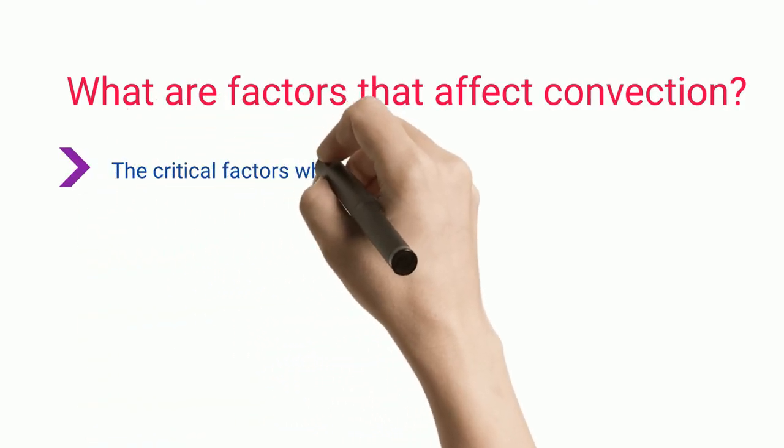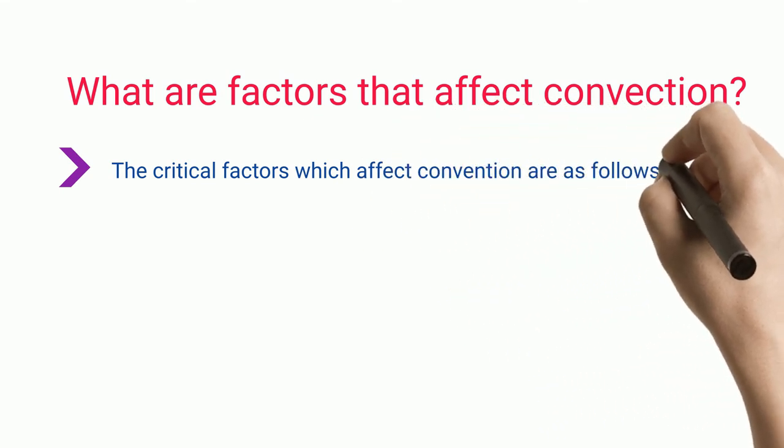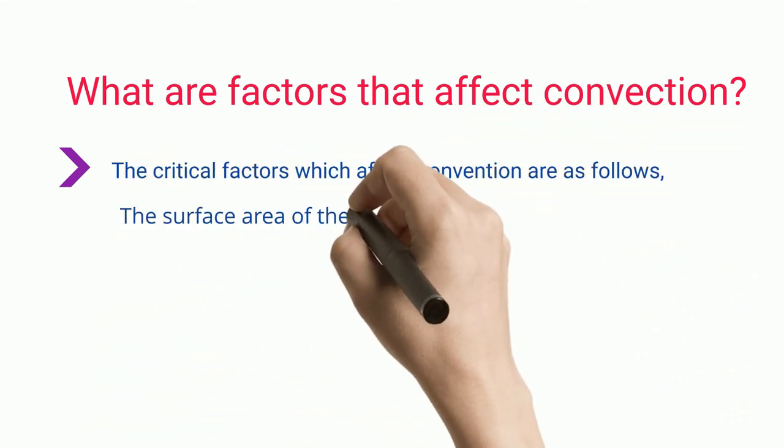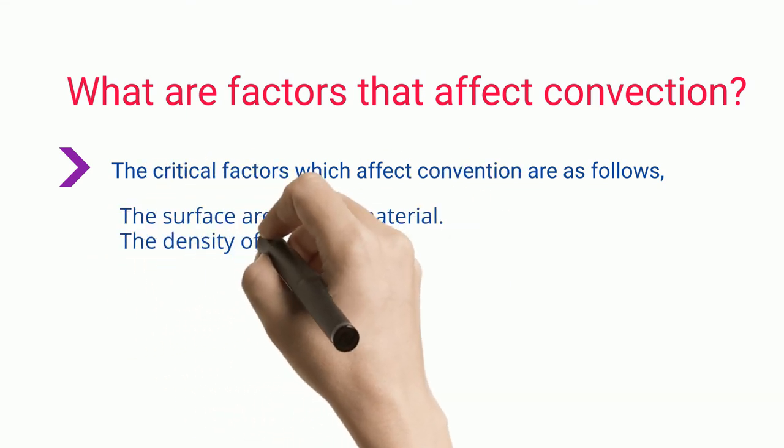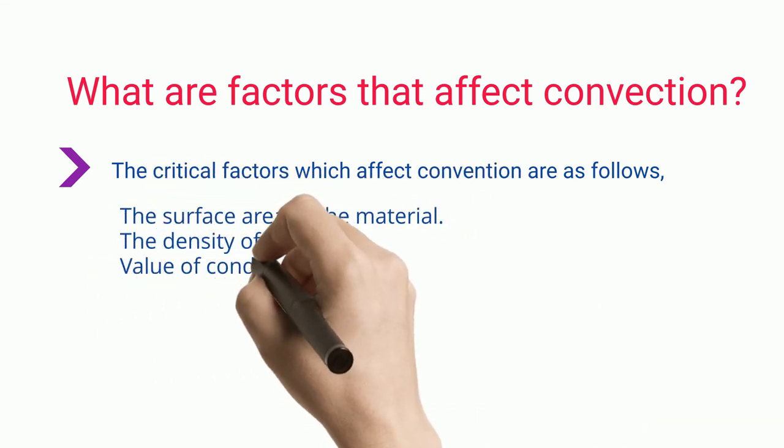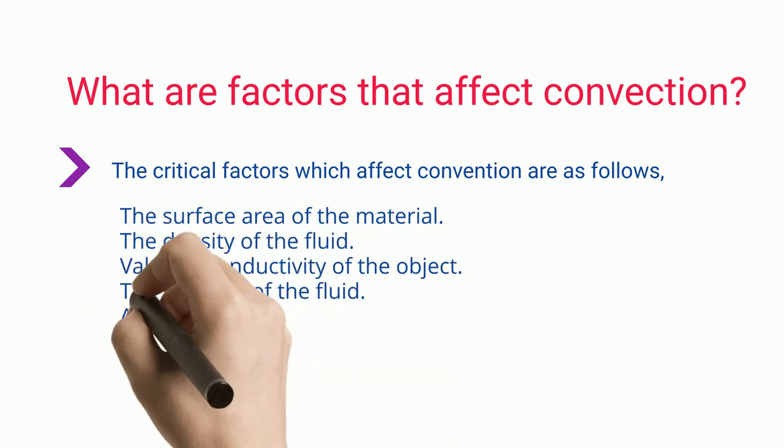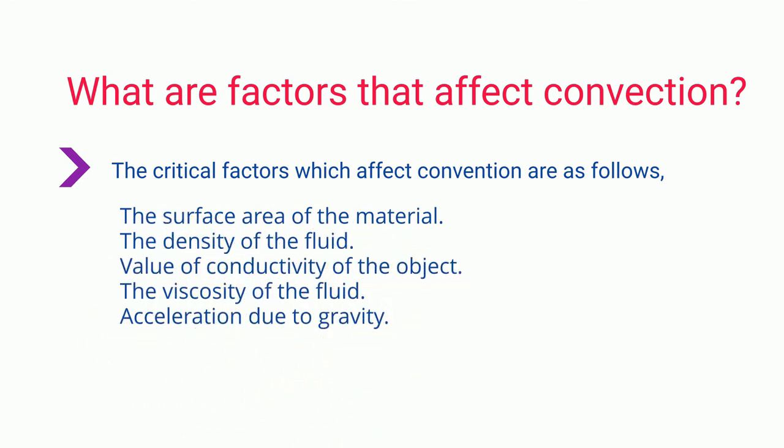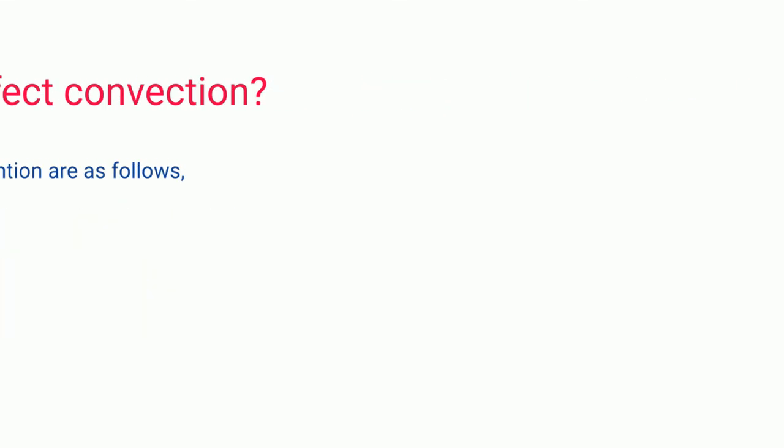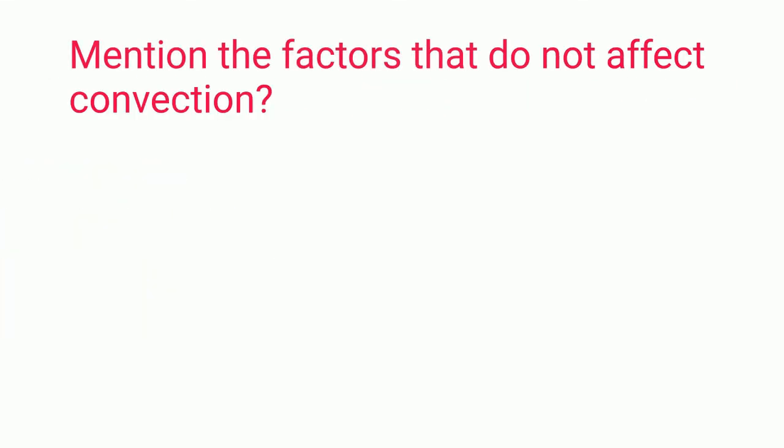What are factors that affect convection? The critical factors which affect convection are as follows: The surface area of the material. The density of the fluid. Value of conductivity of the object. The viscosity of the fluid. Acceleration due to gravity.